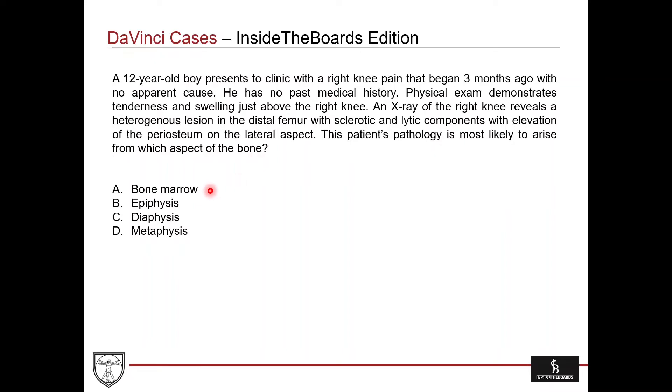The answer choices are: A, the bone marrow; B, the epiphysis; C, the diaphysis; and D, the metaphysis.